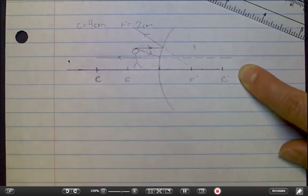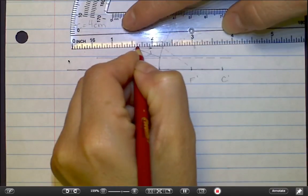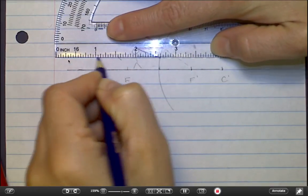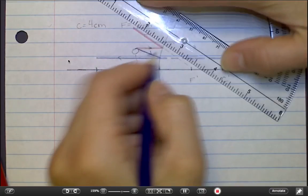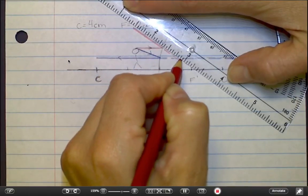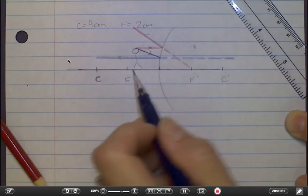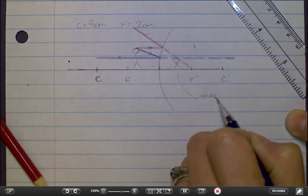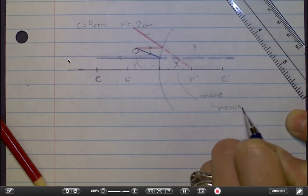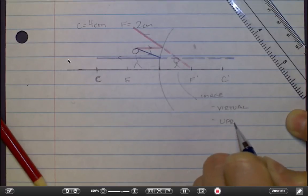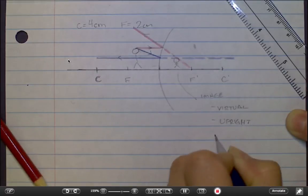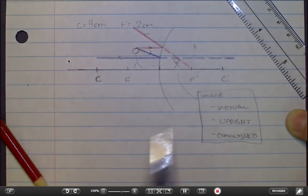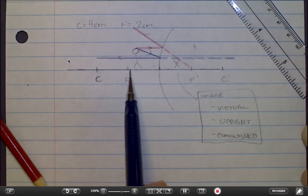These last two lines are reflected with color. The image is formed at the intersection of these two virtual rays. The image is virtual. It's also upright and diminished in size. These three are true all the time for any object distance that's smaller than the focal length of the lens.